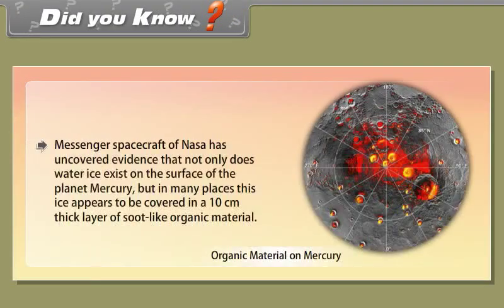Did you know? NASA's MESSENGER spacecraft has uncovered evidence that not only does water ice exist on the surface of the planet Mercury, but in many places this ice appears to be covered in a 10 cm thick layer of soot-like organic material.